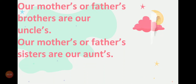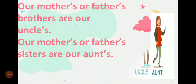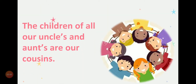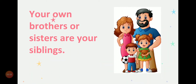Our mother's or father's brother are our uncles. Our mother's or father's sisters are our aunts. The children of all our uncles and aunts are our cousins. Your own brother or sister are your siblings.